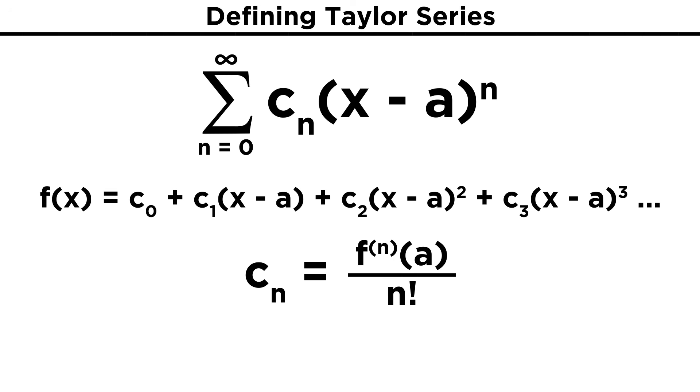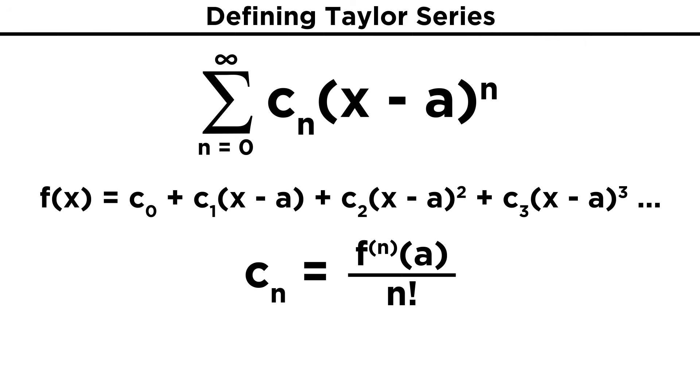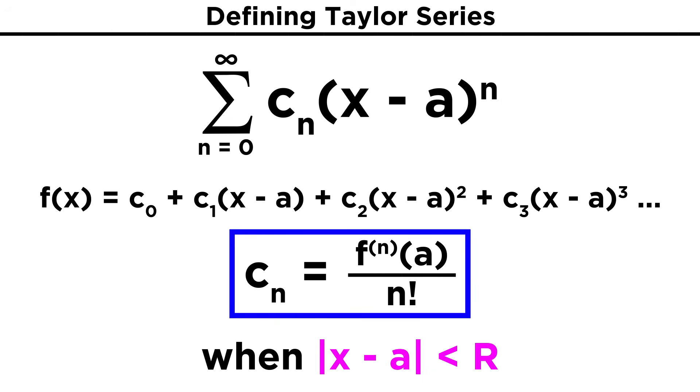c sub n equals the nth derivative of f evaluated at a divided by n factorial. This works for all the terms, even the first, if we understand that the zeroth derivative of a function is simply the function itself, and that zero factorial equals one. So to summarize, for the function given by the sum of c sub n times the quantity x minus a to the n power, where the absolute value of x minus a is less than the radius of convergence for the series, the coefficients of the function are given by this formula.